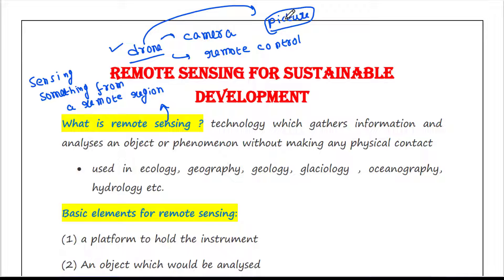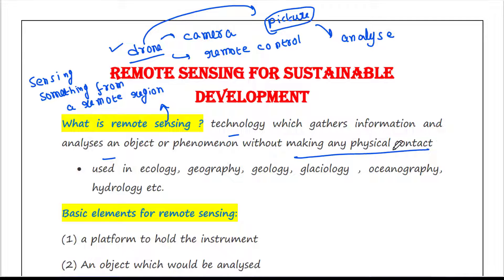That means you are not reaching to the place yourself. You are controlling a camera which takes pictures for you, and later you analyze those pictures. This is called remote sensing. So what is remote sensing? Remote sensing is a technology which gathers information and analyzes an object or phenomena without making any physical contact.